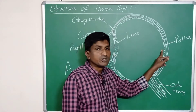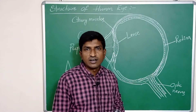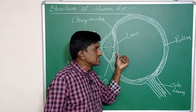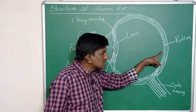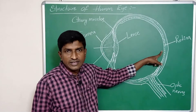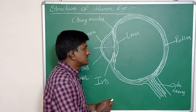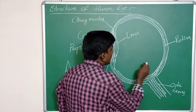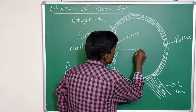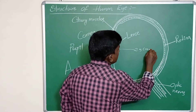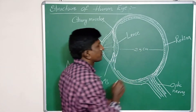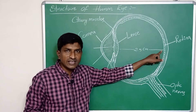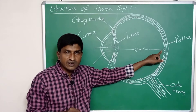The rear end or back side of the eyeball is called the retina. The image formed by the eye lens is always formed on the retina. The distance between the eye lens and the retina is 2.5 centimeters; the retina acts like a screen.